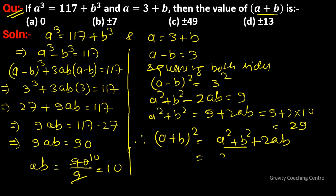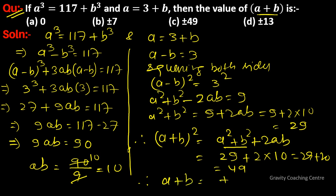So a plus b whole square equal to 29 plus 2 into 10, which is 29 plus 20 equal to 49. Therefore a plus b equal to plus minus root under 49 equal to plus minus 7. So option B is the correct answer.